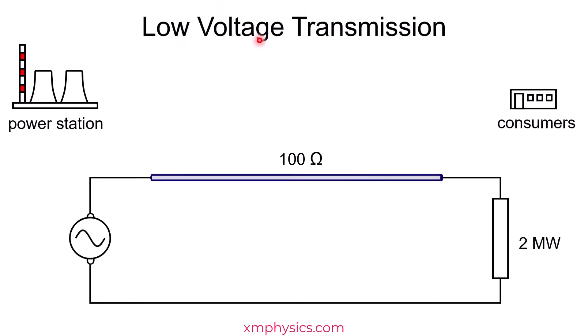Now see what happens if we use low voltage transmission instead. So if we use a relatively low voltage of 20 kilovolts, then we require a relatively high current of 100 amps. Now we have 100 amps running through these 100 ohms. The power loss is, tada, 1 megawatt, which is unacceptable compared to 2 megawatts.